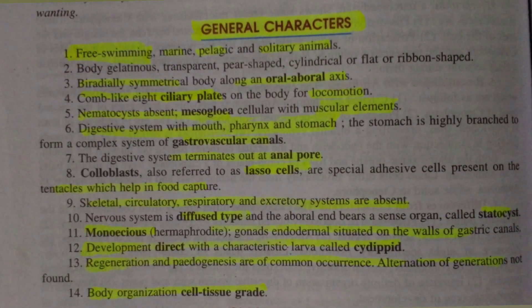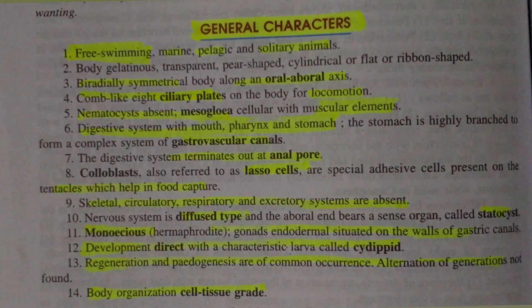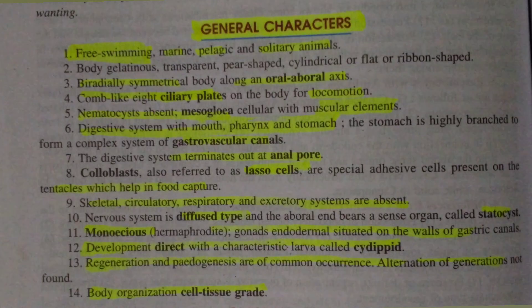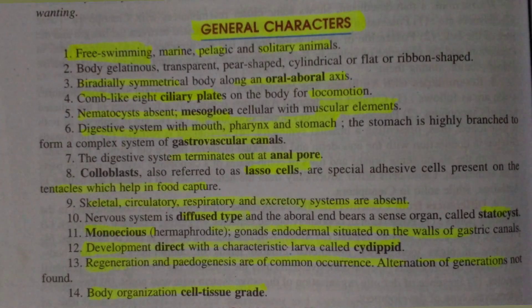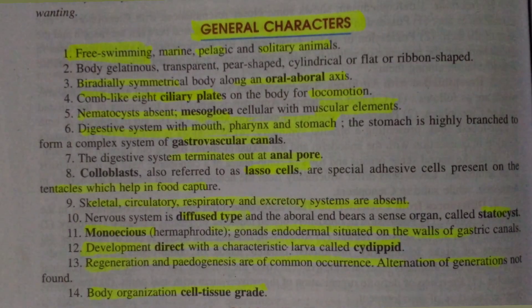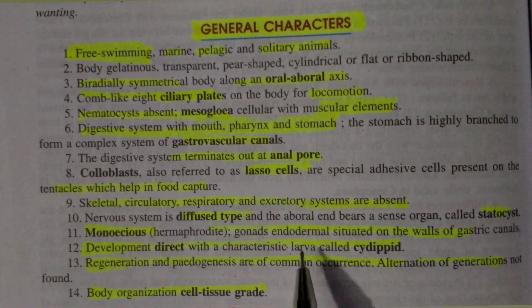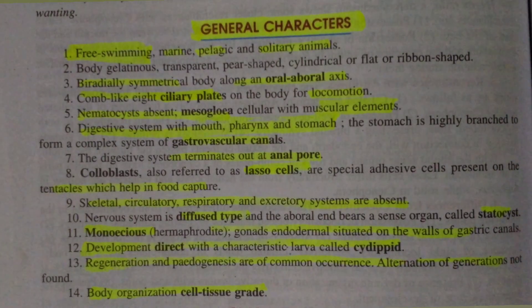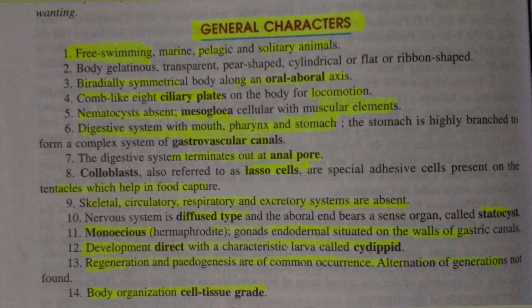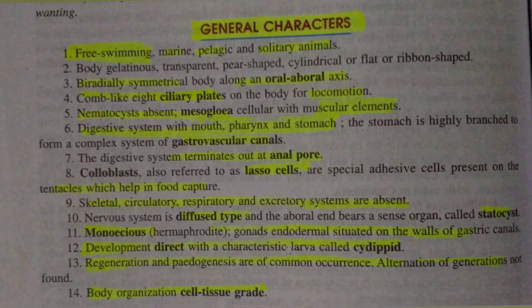All organisms are monoecious (hermaphrodite — ubhaylingi), meaning all organisms contain both male and female reproductive organs in the same individual. Most individuals in Ctenophora have both male and female reproductive organs. Gonads are endodermal — meaning the gonads (testis and ovary) originate from the endoderm layer.